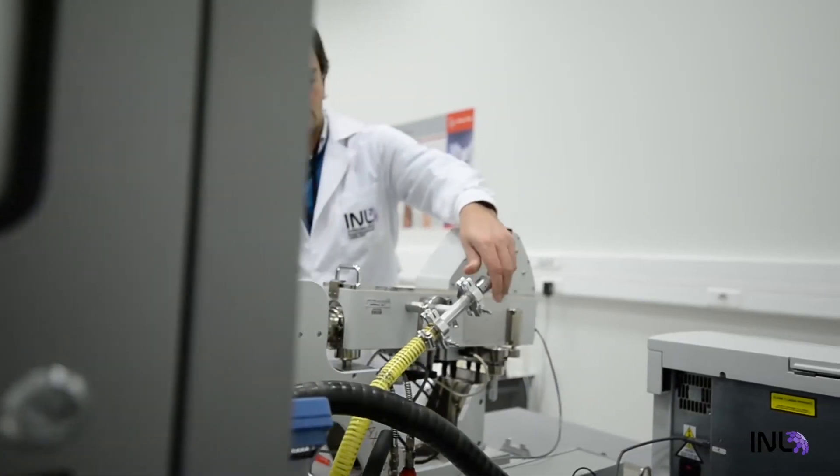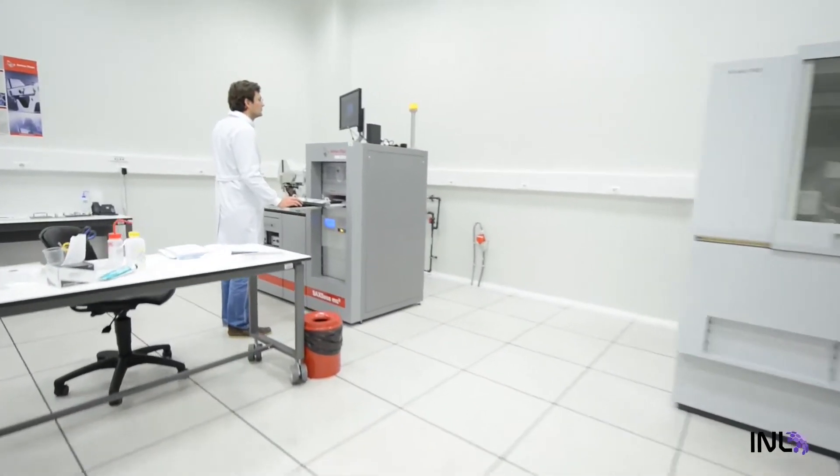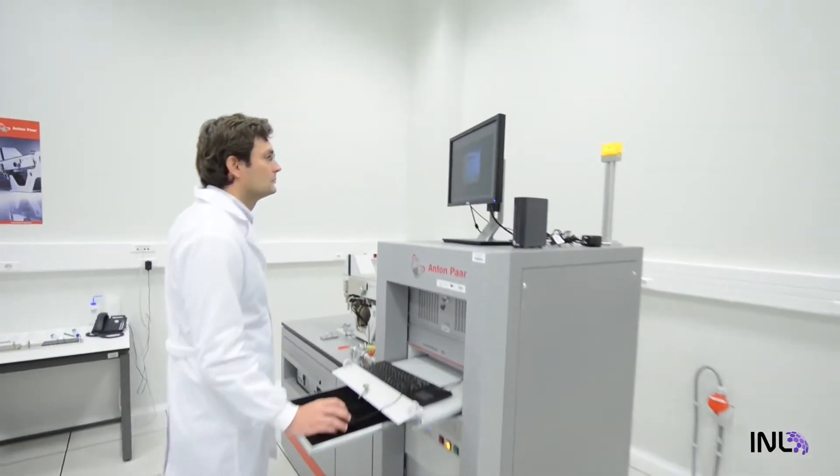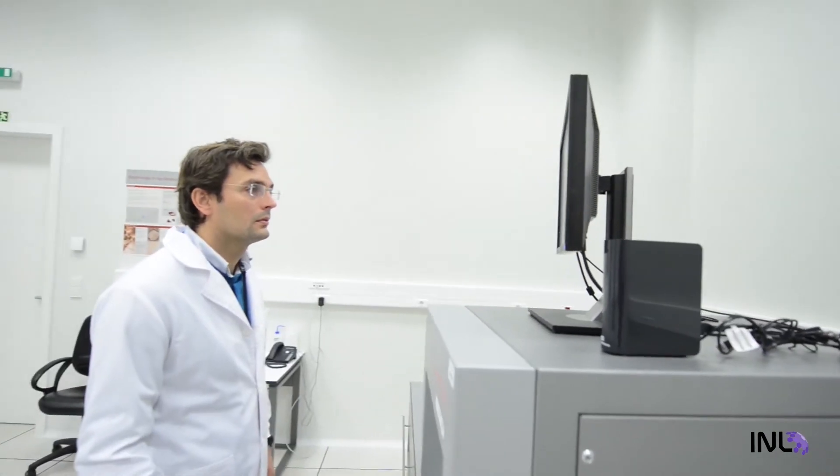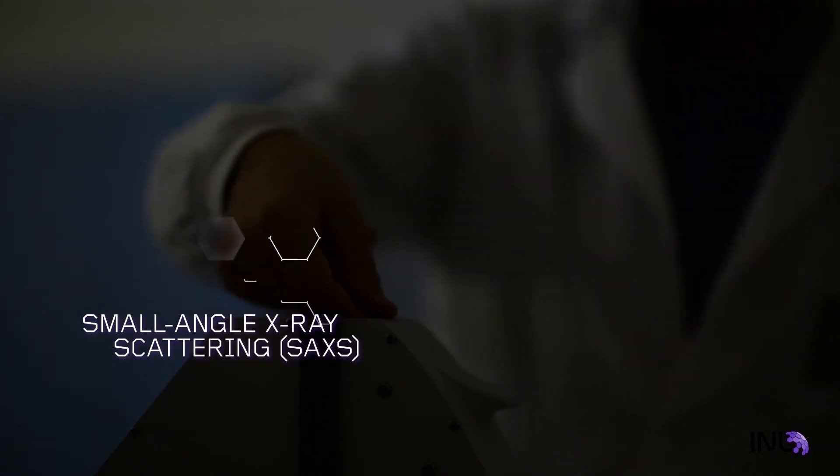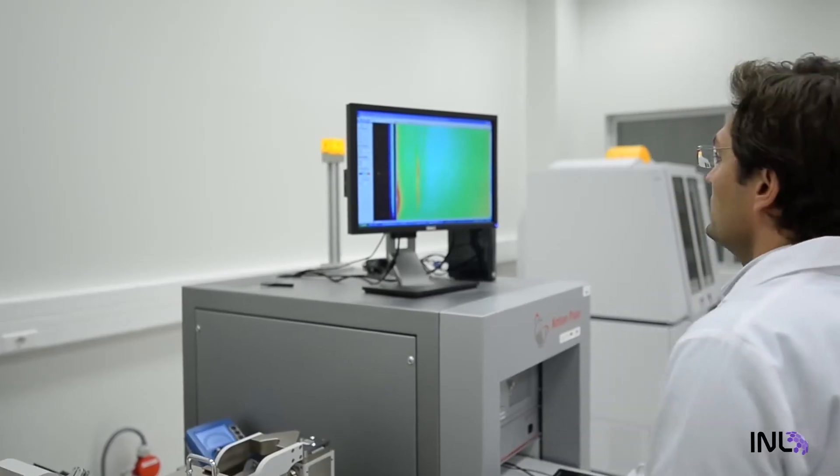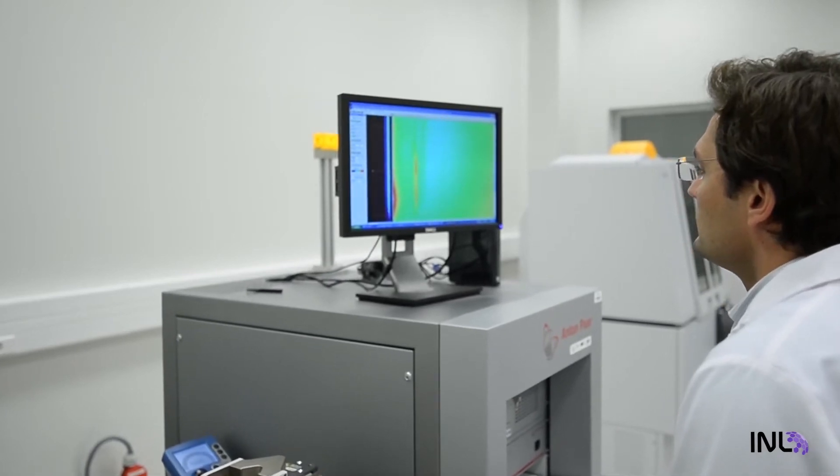SAXS can analyze sizes and distribution of nanoparticles in a sample. After loading a sample, the moving components of the system allow us to position it precisely in the path of the X-rays. As the X-ray beam passes through the sample, it creates a pattern on the detector.